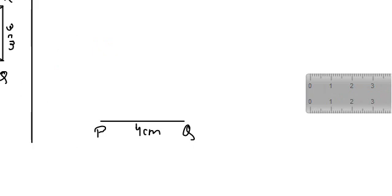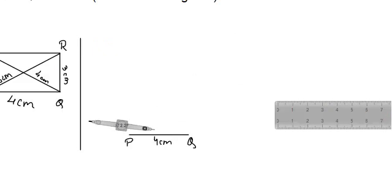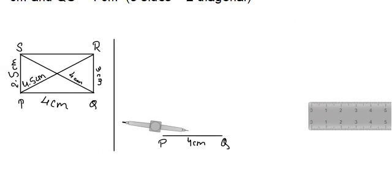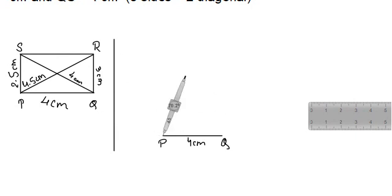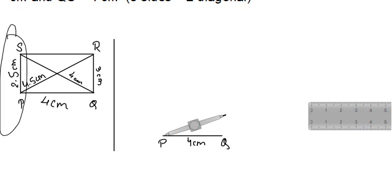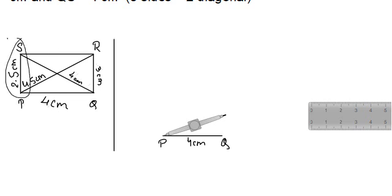Now take the compass. We'll keep it at both points one by one. I'll begin with point P. From point P we will draw one side and one diagonal: first PS, then PR. PS = 2.5 cm, so open the compass to 2.5 cm and keep it at point P.